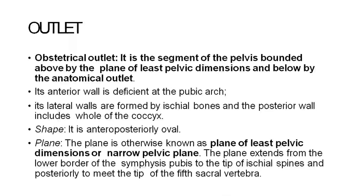Outlet: The obstetrical outlet is the segment of the pelvis bounded above by the plane of least pelvic dimensions and below by the anatomical outlet. The anterior wall is deficient at the pubic arch. The lateral walls are also formed by the ischial bones, and the posterior wall is formed by the coccyx. It is anteroposteriorly oval in shape.